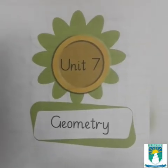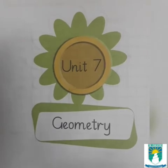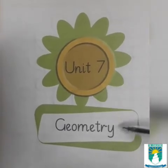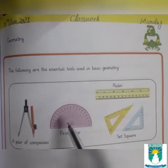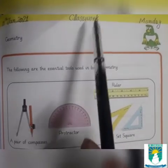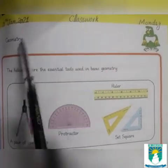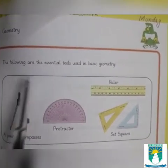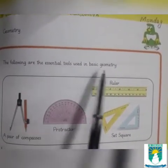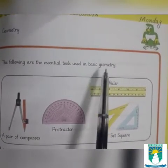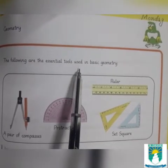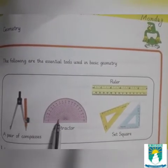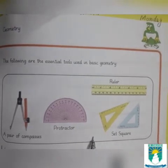I hope you all are fine. I'm your math teacher. We are going to start unit number seven, geometry. Ready your page and mention classwork, day and date on top of your page. The following are the essential tools used in basic geometry: a pair of compasses, protractor, ruler, and set square.